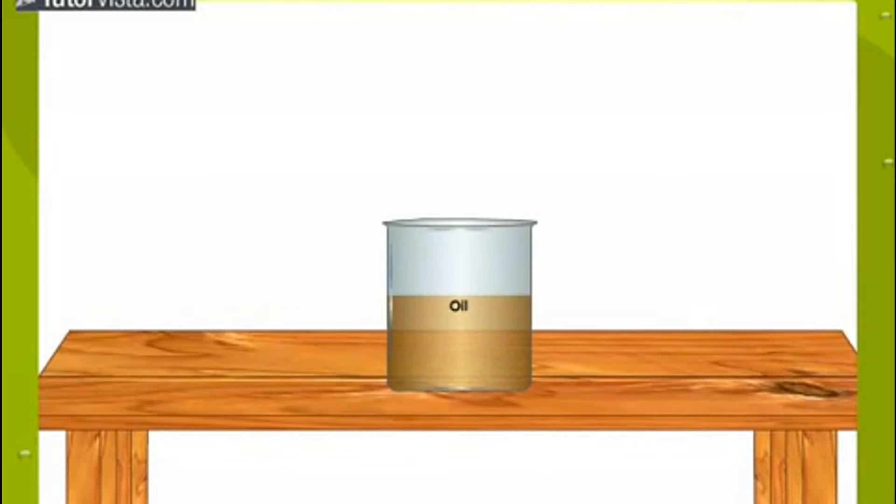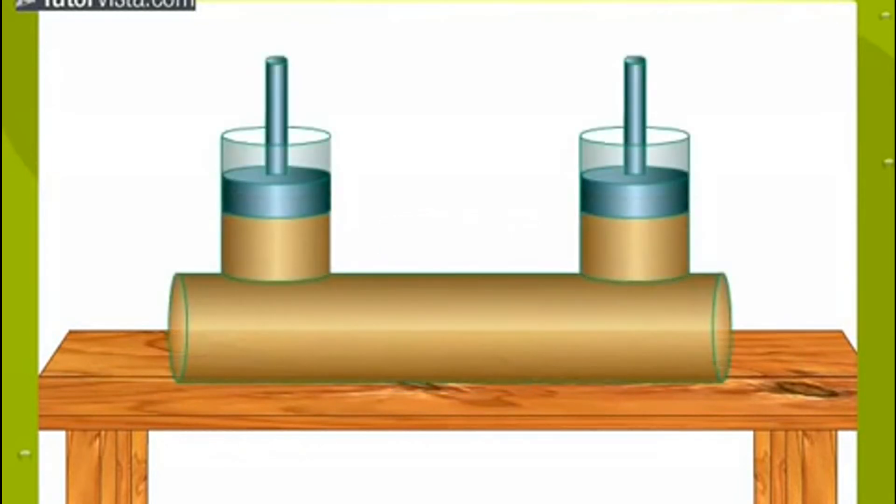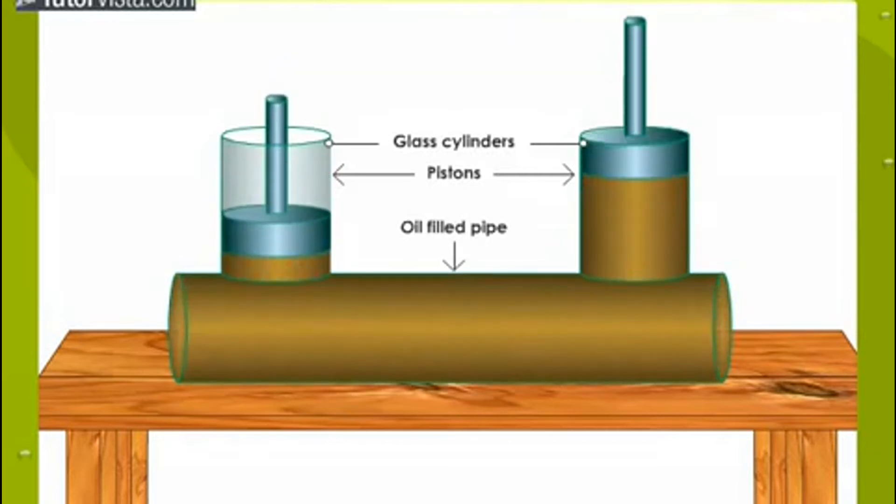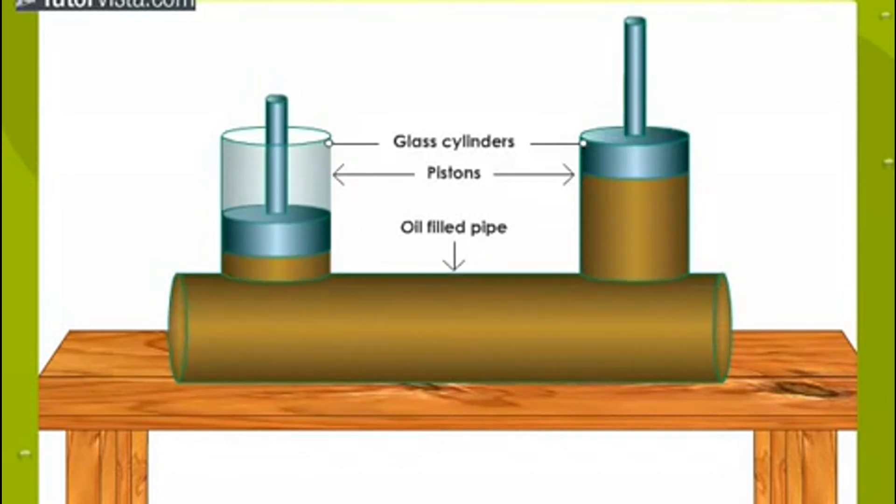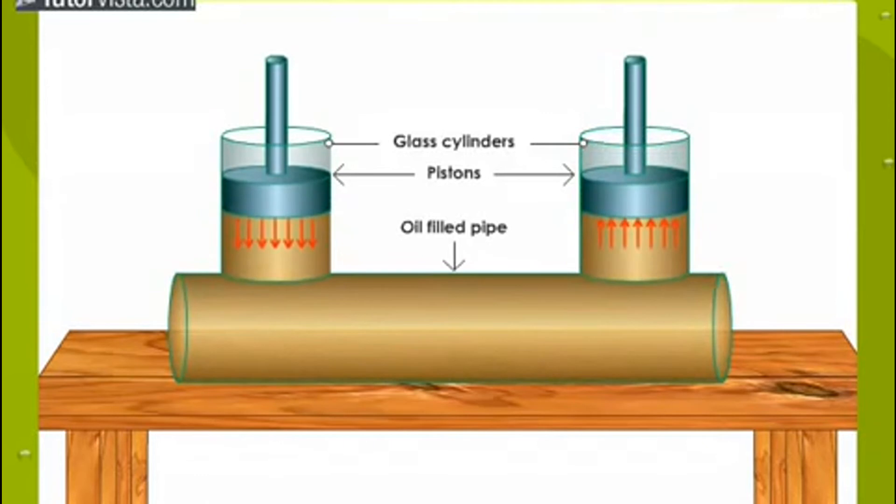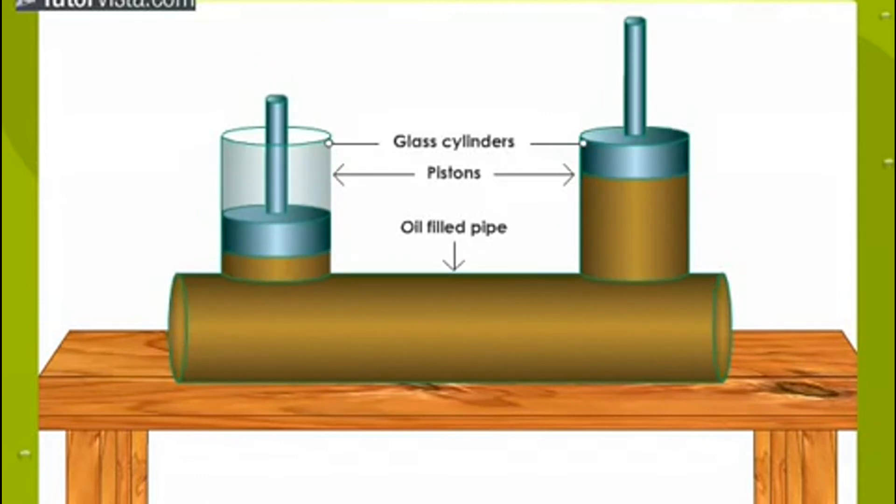Most brake systems also multiply the force in the process. Here you can see the simplest possible hydraulic system. Two pistons are fitted into two glass cylinders filled with oil and connected to one another with an oil-filled pipe. If you apply a downward force on one of the pistons, then the force is transmitted to the second piston through the oil in the pipe. Since oil is incompressible, the efficiency is very good.